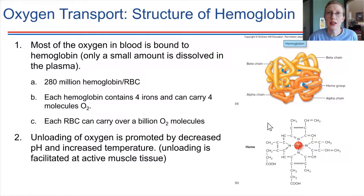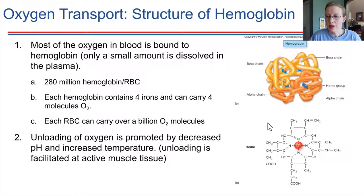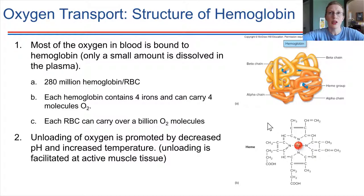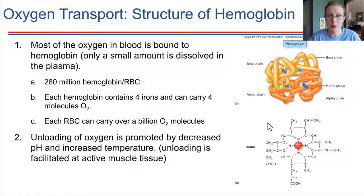In sickle cell disease, there's a single amino acid substitution that causes the hemoglobin molecule to tend to polymerize — it tends to fold into a chain-like form. This alters the shape of the entire red blood cell when it happens to a high enough degree, which can be very serious.